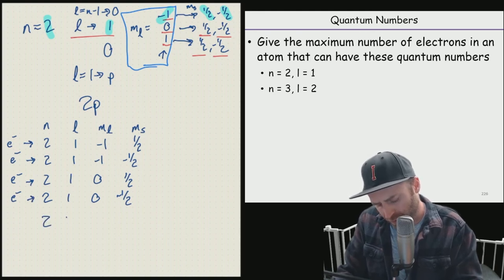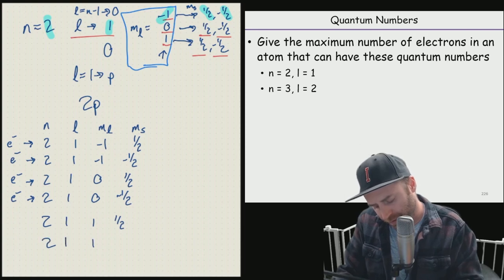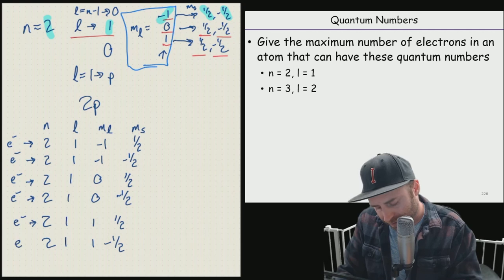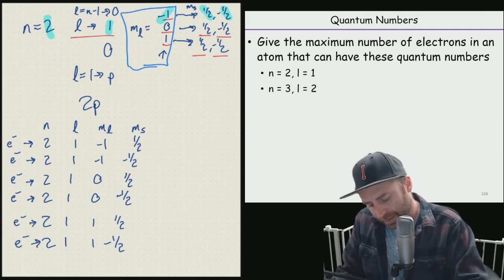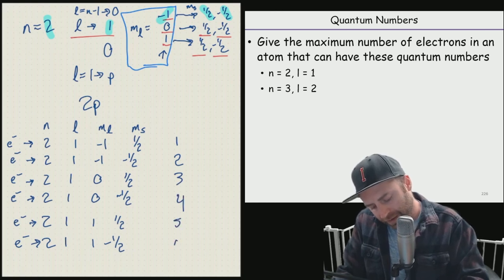And we could have two, one, one, one half, and two, one, one, negative one half. And these are all going to be an electron apiece. So if we count this up, now we have one, two, three, four, five, six.